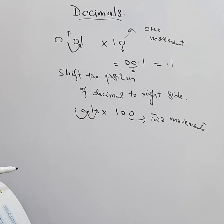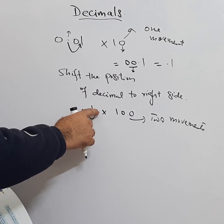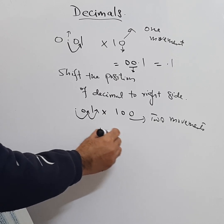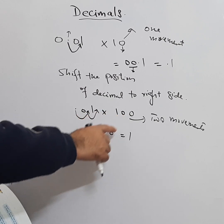So the point will be shifted to after the one. So one point zero, or it is one. The answer is one when you multiply 0.01 with 100.